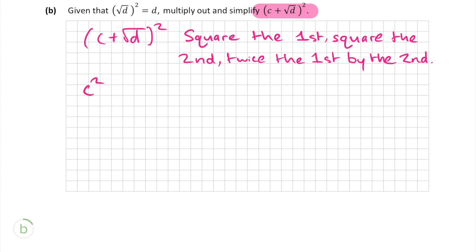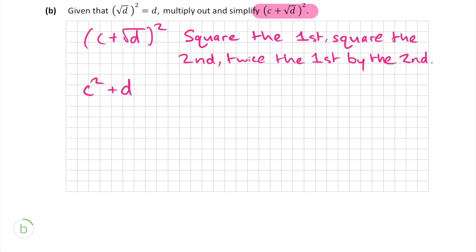Squaring the first number we get C squared, squaring the second number we get D and twice the first number by the second number gives us 2C root D. If you like you can rewrite this as C squared plus 2C root D plus D. If you learn this trick off it'll make squaring out any brackets a lot easier and faster. That's all we have to do for part B and that gives us 5 marks.